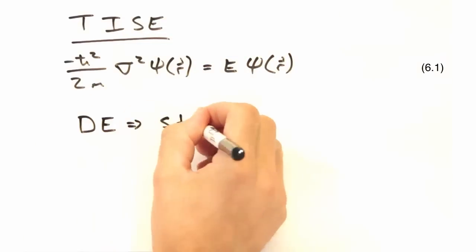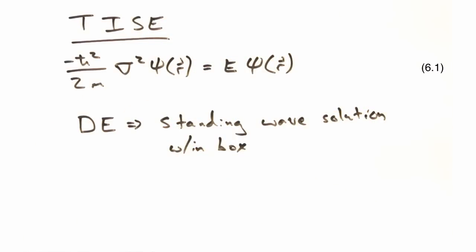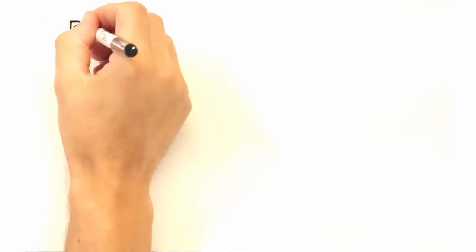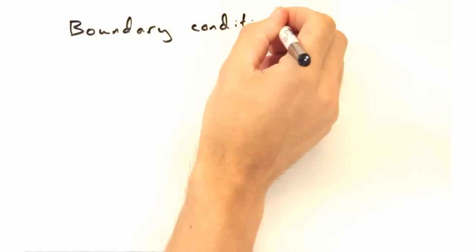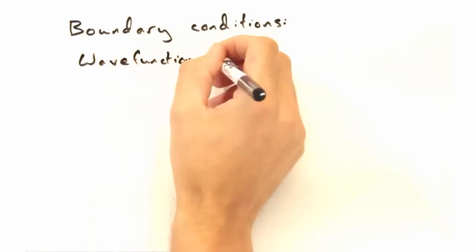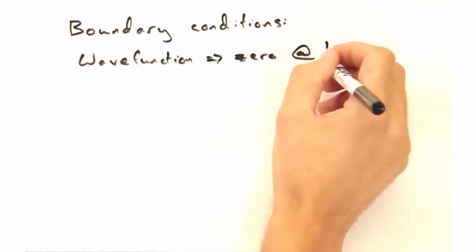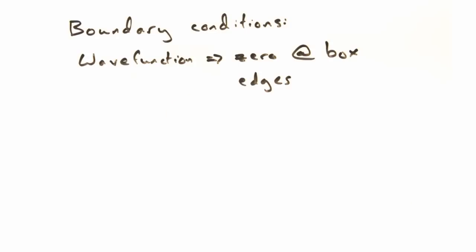Good, so now we have a relatively easy DE that's going to give us a standing wave solution, but what are we missing? Our boundary conditions, right? Indeed, so let's assume that our electron never leaves the box. Then our wave function would be zero at the box edges.